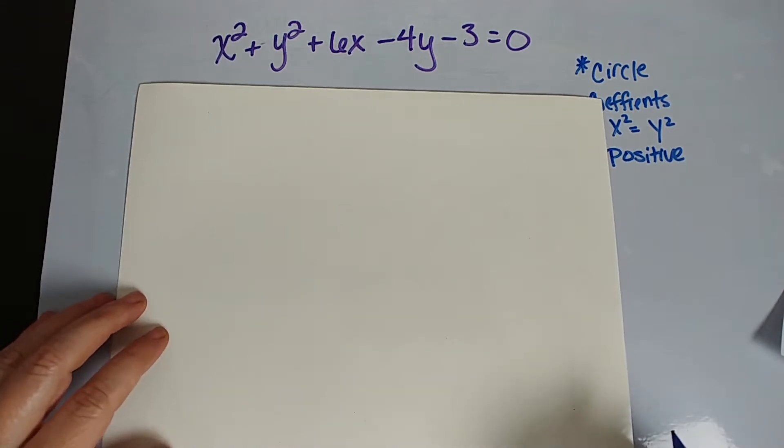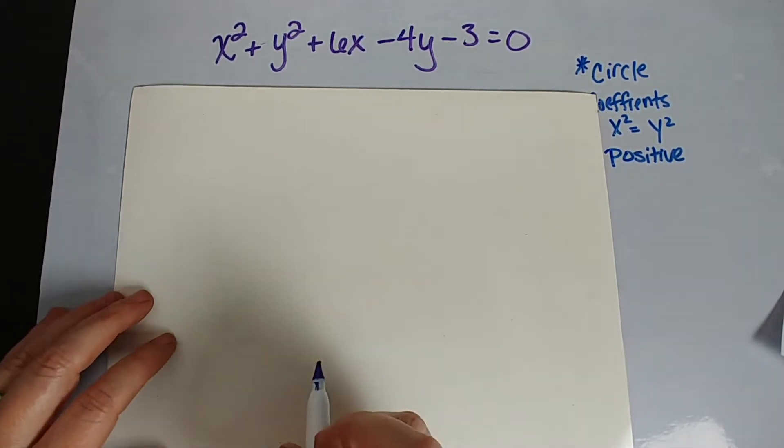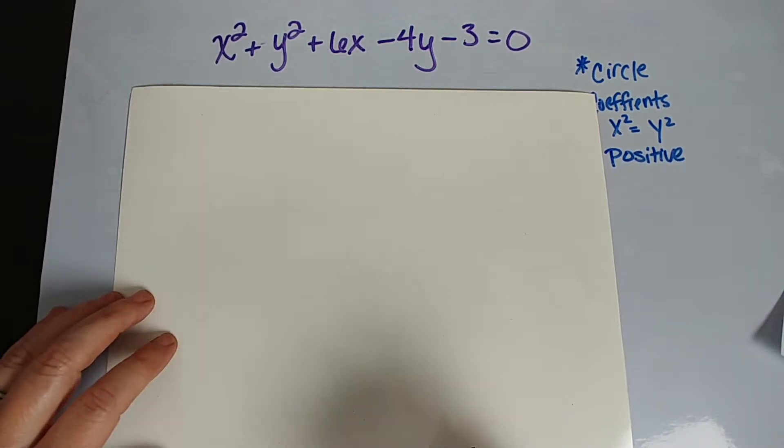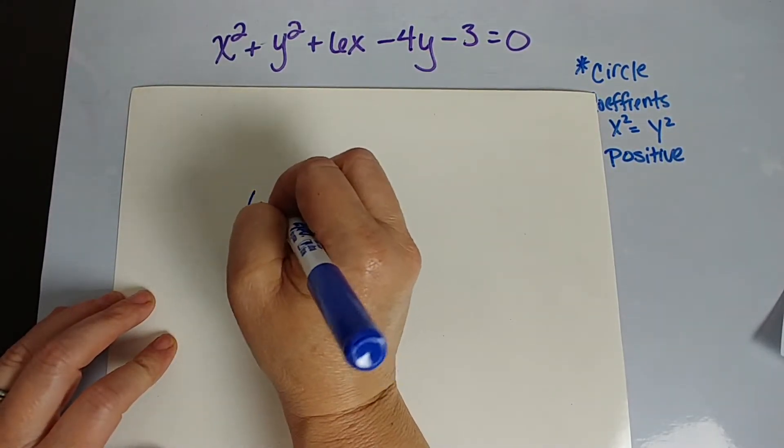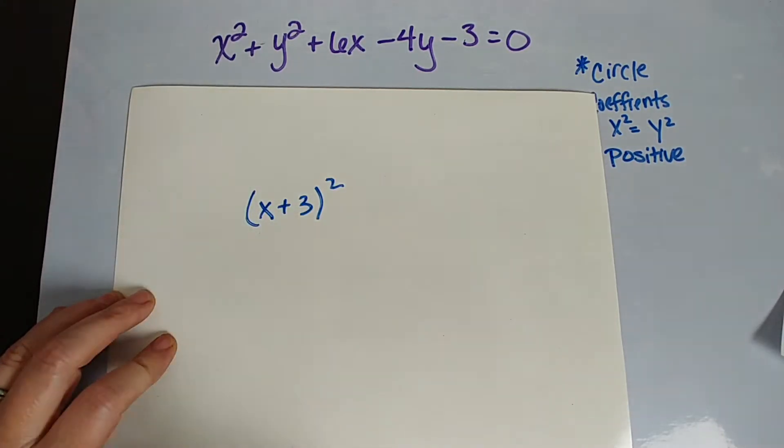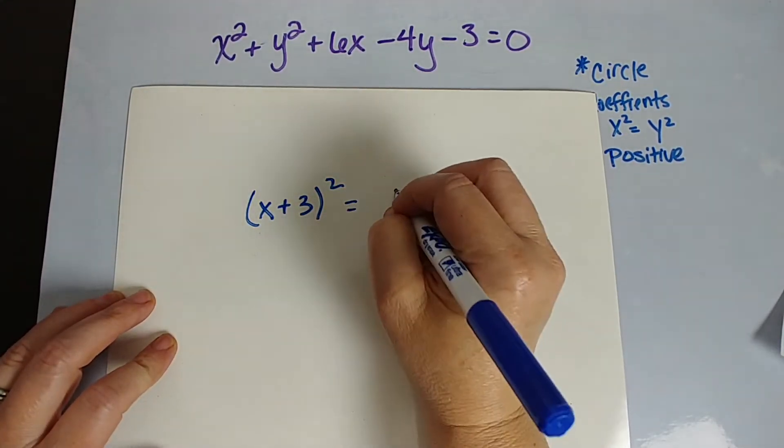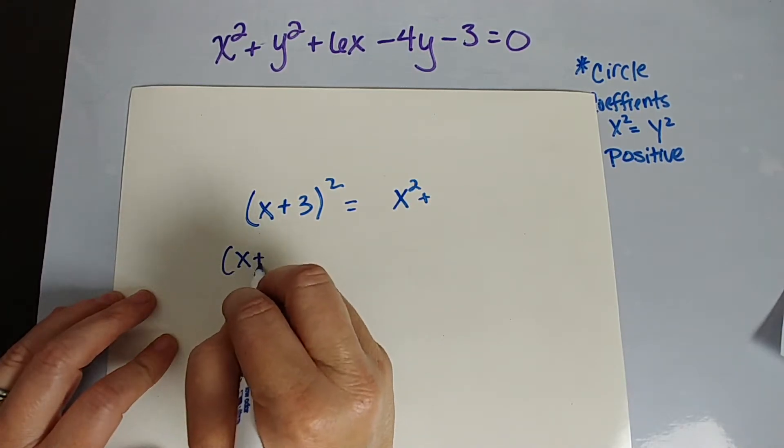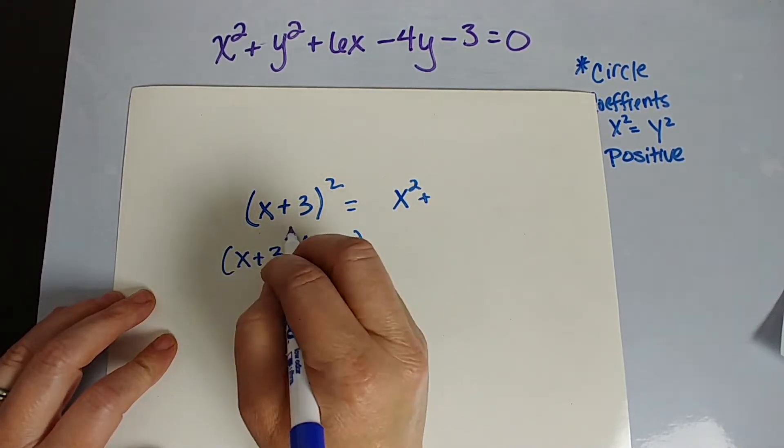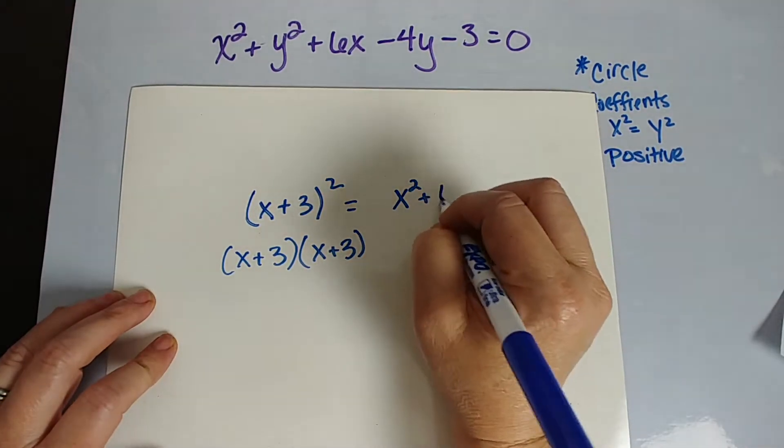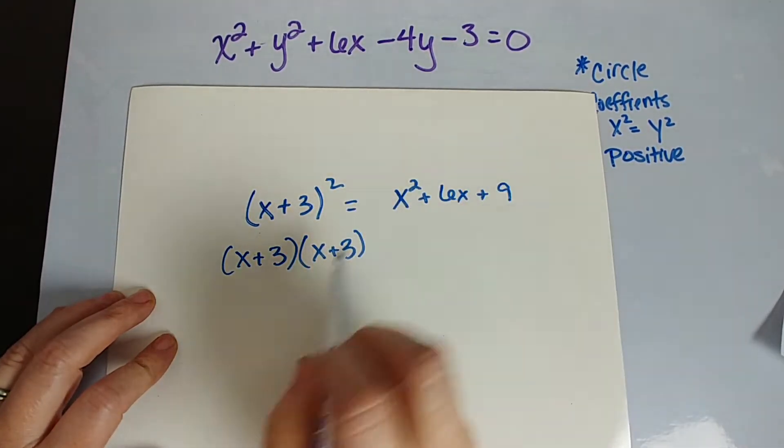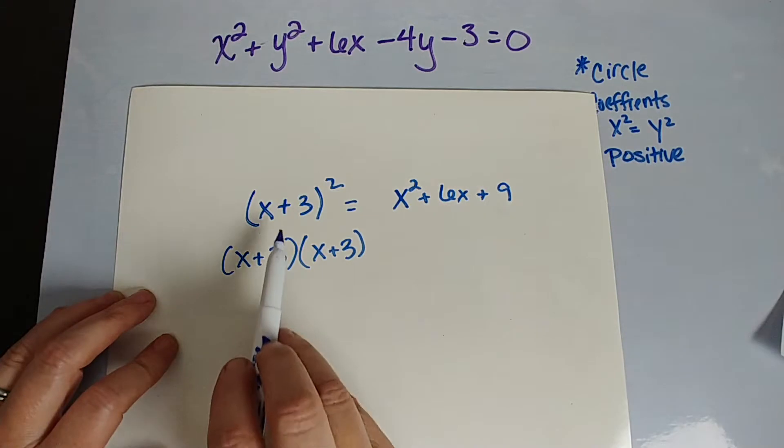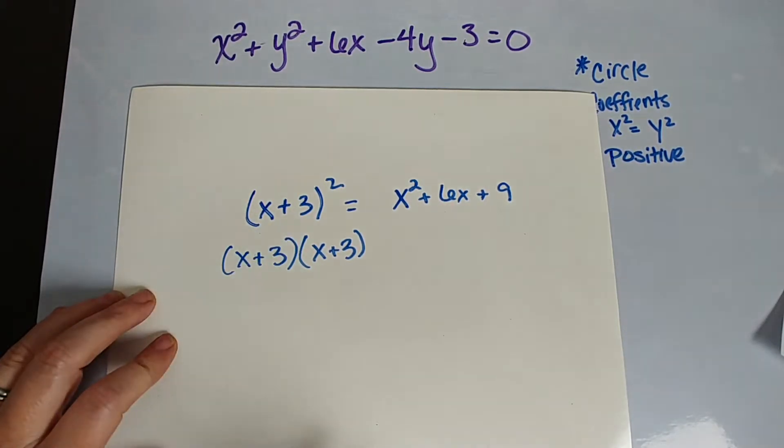Completing the square may cause some of you to have heart palpitations. It really shouldn't. Completing the square comes from perfect square trinomials. For example, x plus 3 squared would become x squared plus 6x plus 9, because we'd have x plus 3 times x plus 3. So we square the last, square the first, and then we double the product of the outer and inner.